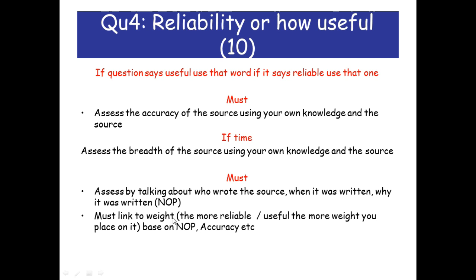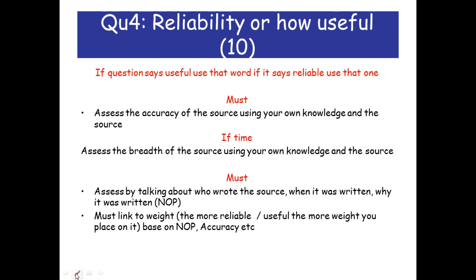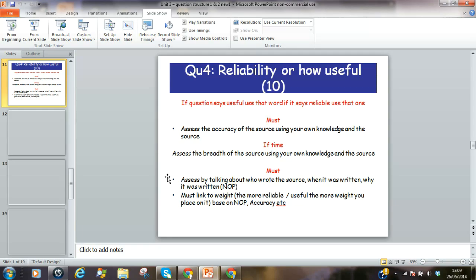When talking about the sources, you must link to the weight of the source. The weight is basically like trust — on a scale of one to ten, how much would you trust that source? You could say after assessing the sources I can place a lot of weight on it, this being seven out of ten for reliability or usefulness. If it's a very unreliable or very unuseful source, you can say it's about one out of ten, so I will place very little weight on this source.